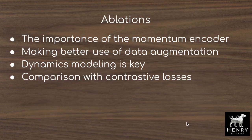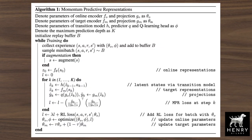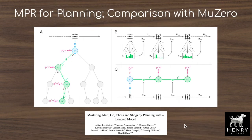The authors also describe ablations, examining the importance of the momentum encoder for the temporal view compared to using two copies of the same online network, different ways of setting up the encoder's parameters, the use of data augmentation compared to frameworks like CURL, the importance of temporal dynamics modeling, and comparison with other contrastive losses versus the cosine similarity loss.